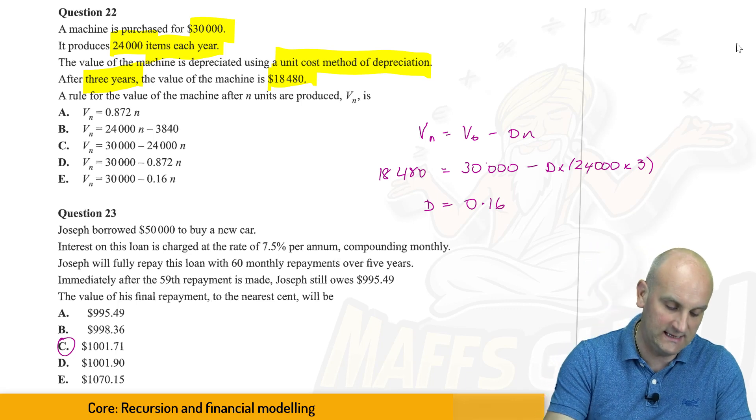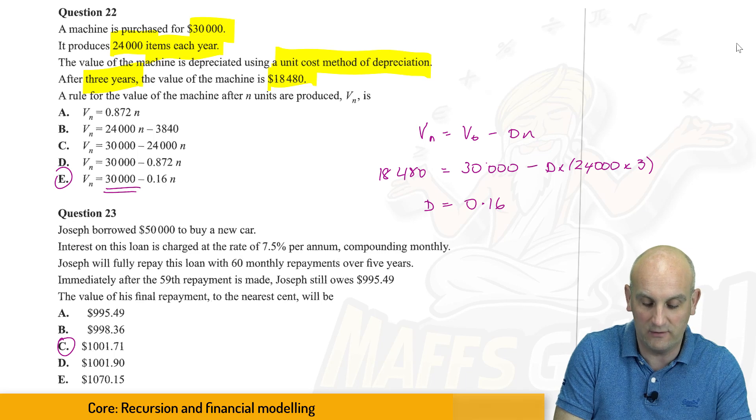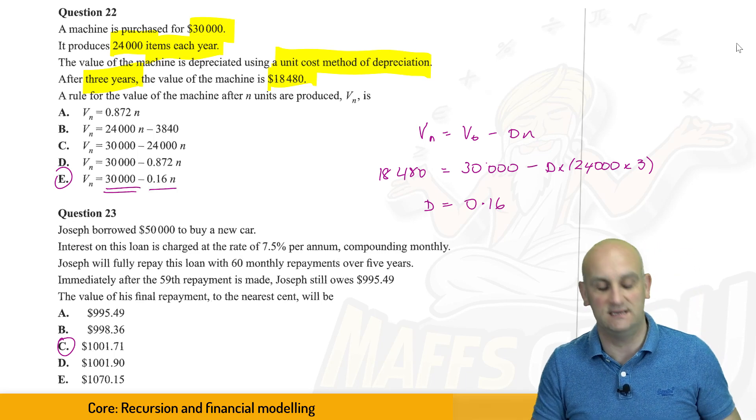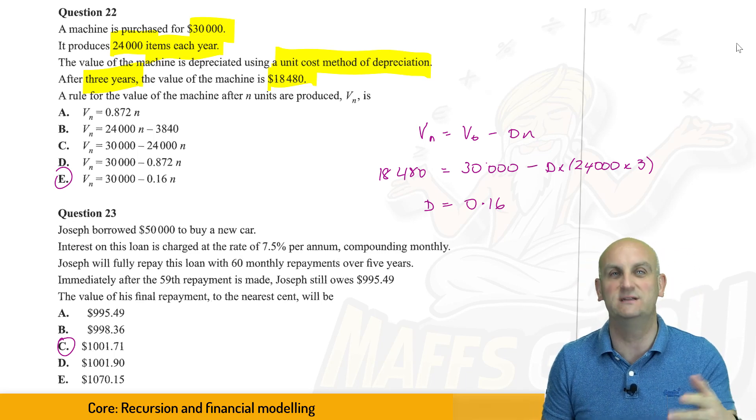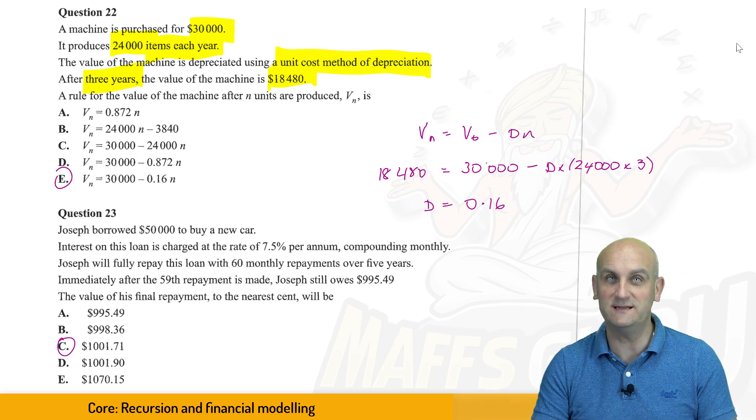That means, therefore, that E is my correct answer because we have V of N is equal to 30,000 minus 0.16 of N. And the best way to check it is sub in the values and see if that, in fact, does give you what you're expecting.